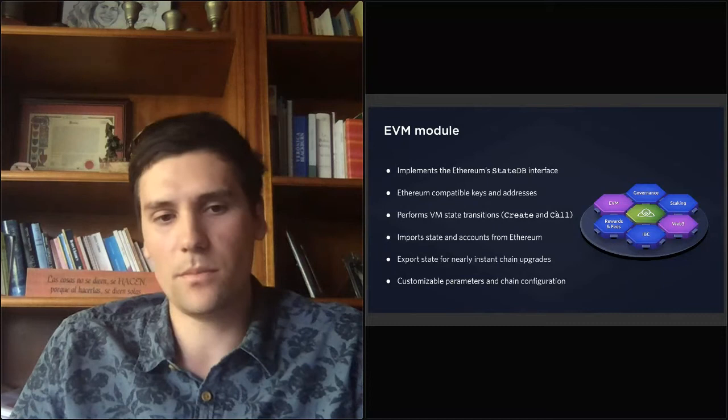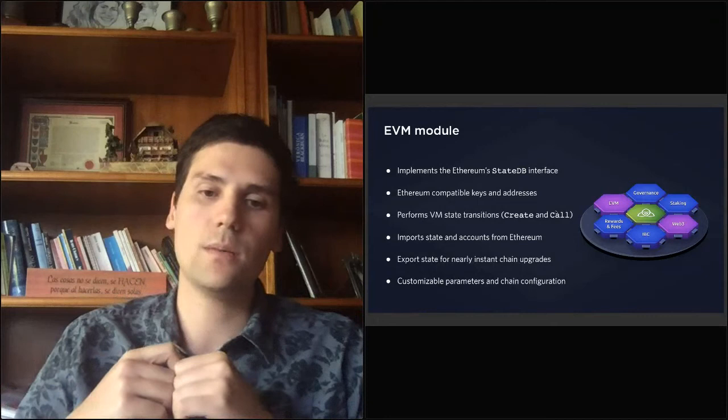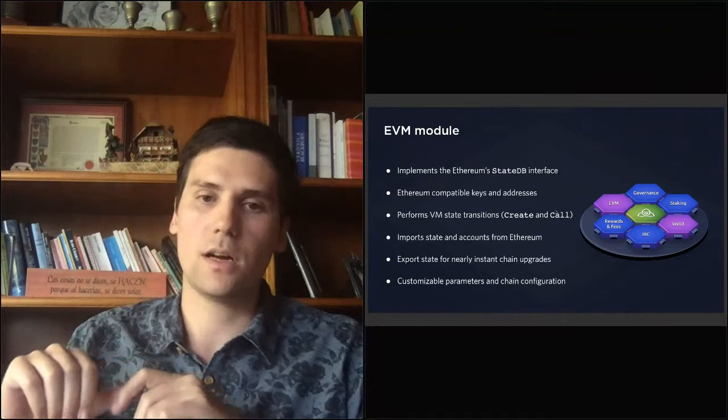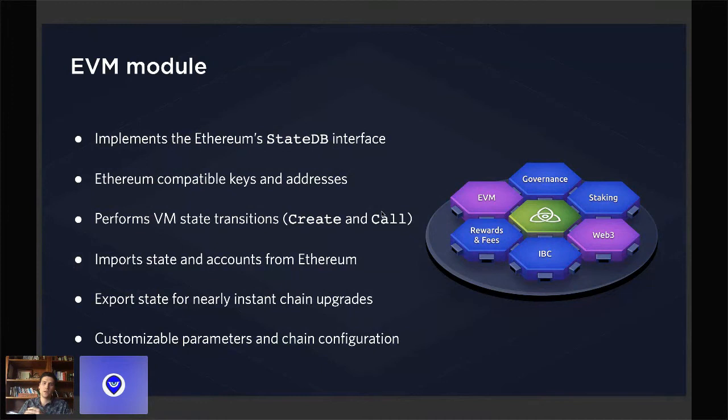Other Cosmos chains will also be allowed, by implementing the EVM module, to fully customize the parameters and VM chain configurations. So you will be able to define your own EIPs — the activatable EIPs that you want to support on your chain — and define which blocks implement each stage. You can have full flexibility over your own VM parameters and configuration with the EVM module.